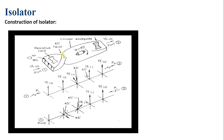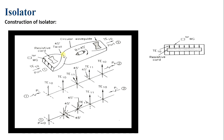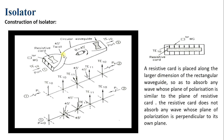We will see how the signal from port 1 passes to port 2 while a signal fed from port 2 is totally attenuated. First, understand the resistive card: it allows unattenuated propagation if the electric field of the wave is perpendicular to it, and absorbs the entire energy if the electric field is parallel to the card. This is an important point for understanding the working of the isolator.